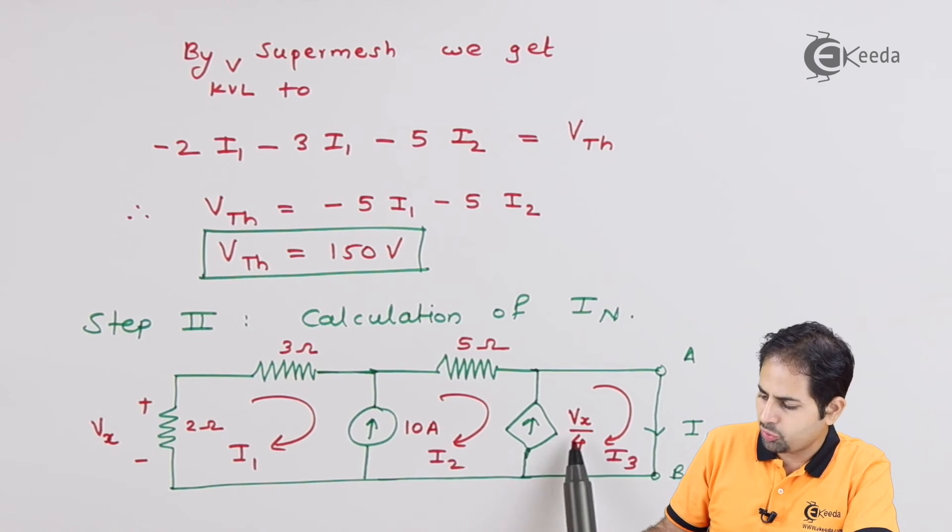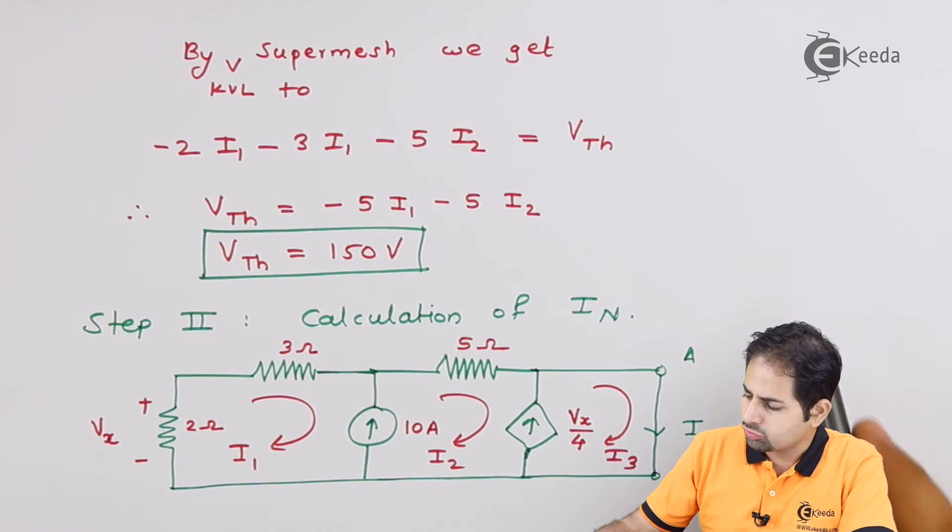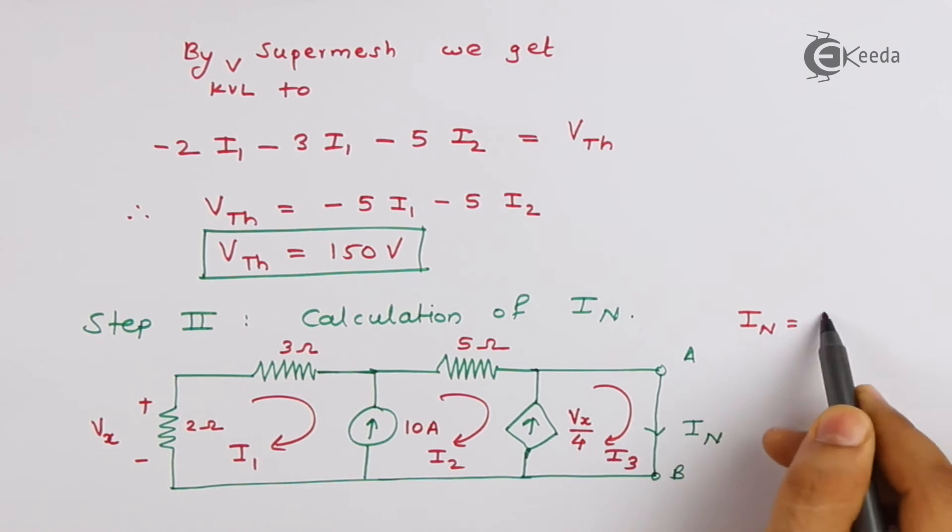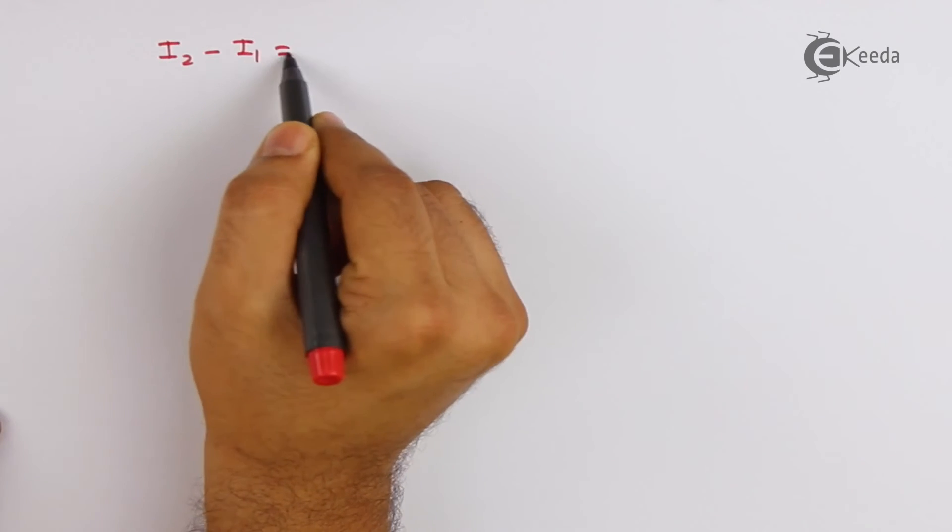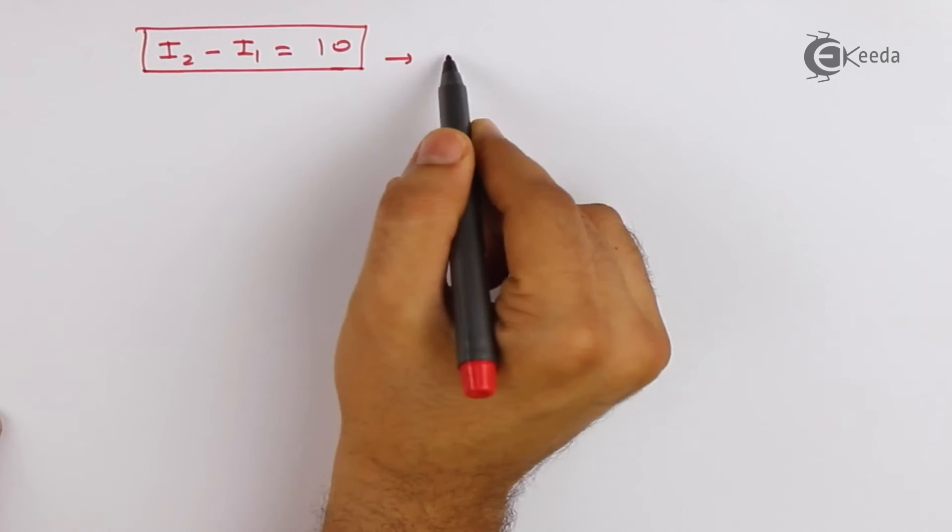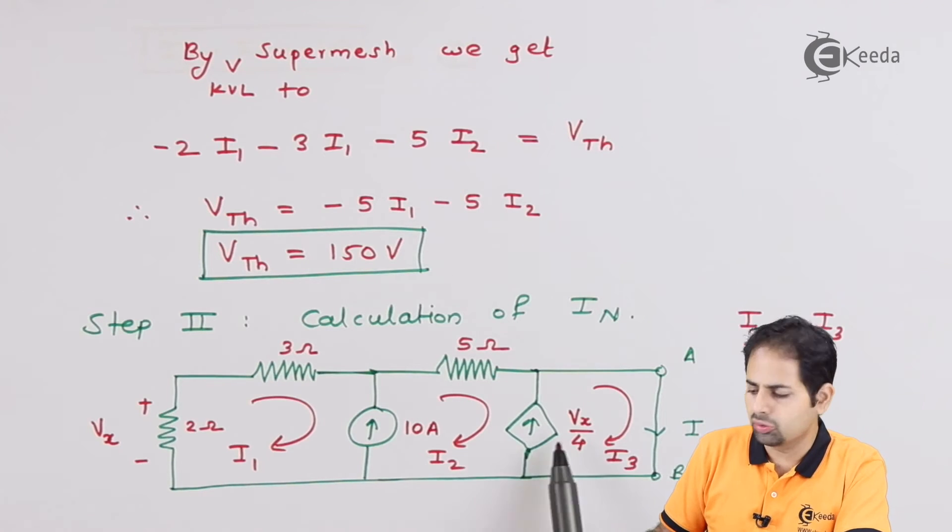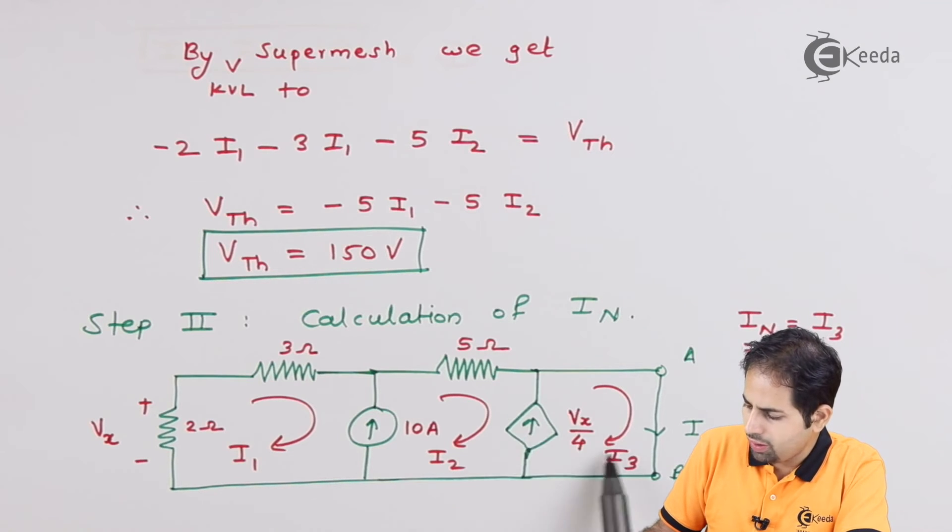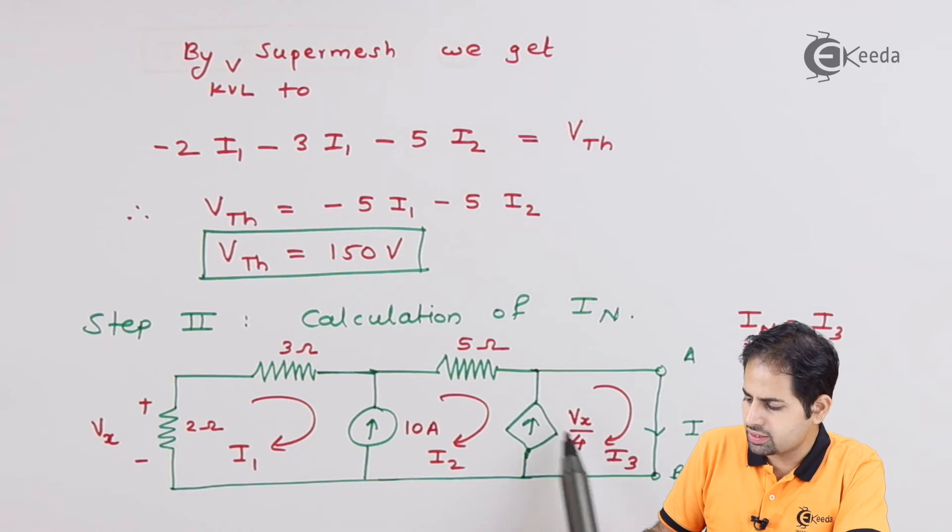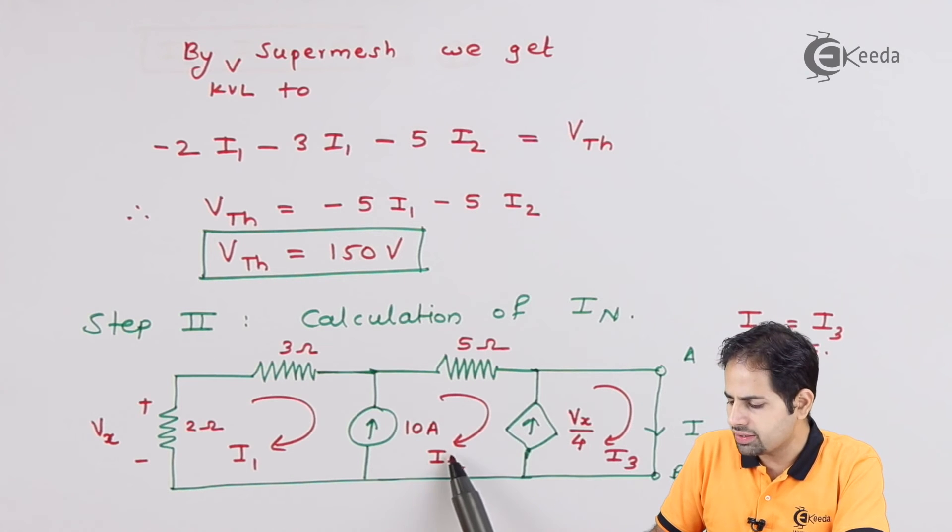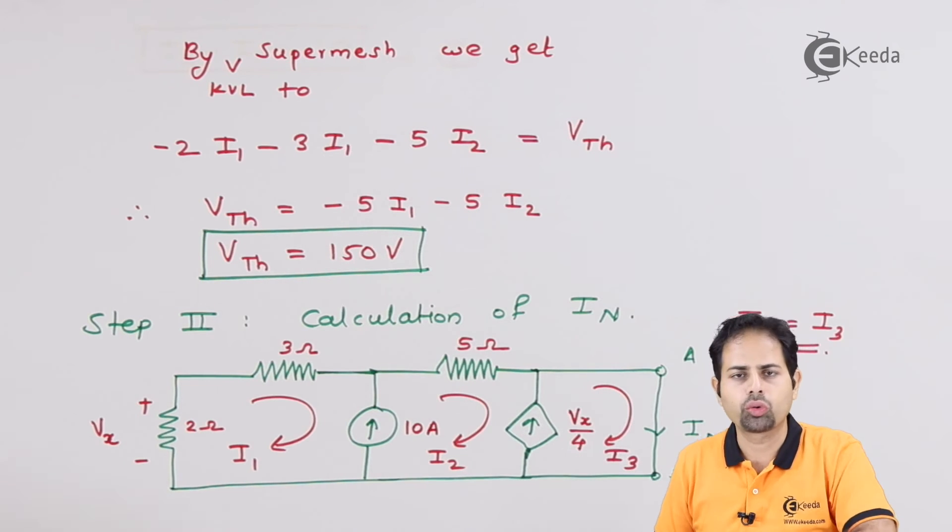Here it is going to be now I3 minus I2 equal to Vx by 4. So first we will write, in the second and third loop, see this current is going above, I3 also is going above, so I3 is greater. So I3 minus I2 is going to be Vx by 4.